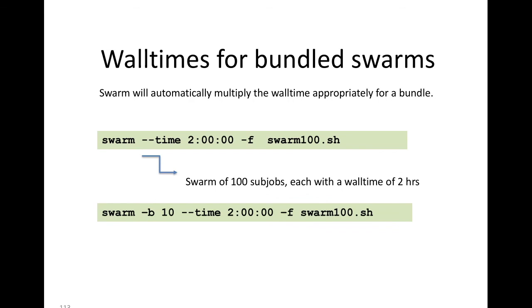Now let's bundle that same command with -b 10. In this case, you'd get a swarm of 10 subjobs, that's 100 divided by 10, and each one would have a wall time of 20 hours, because the swarm program would multiply your requested two hours per command by the bundle factor of 10.